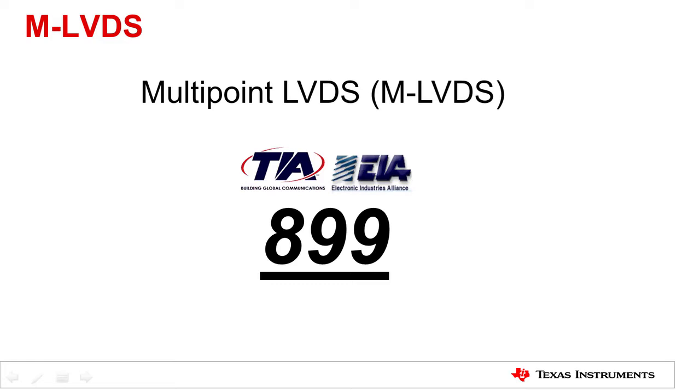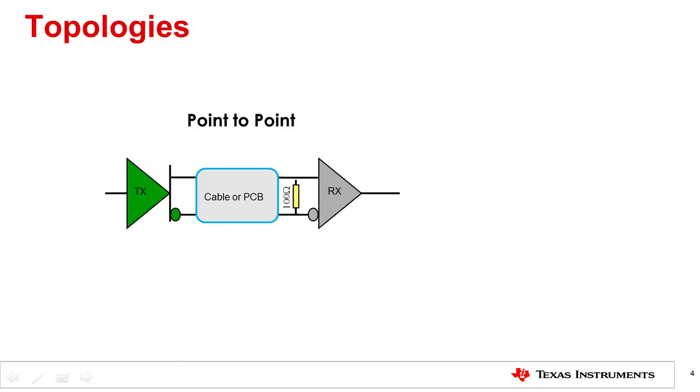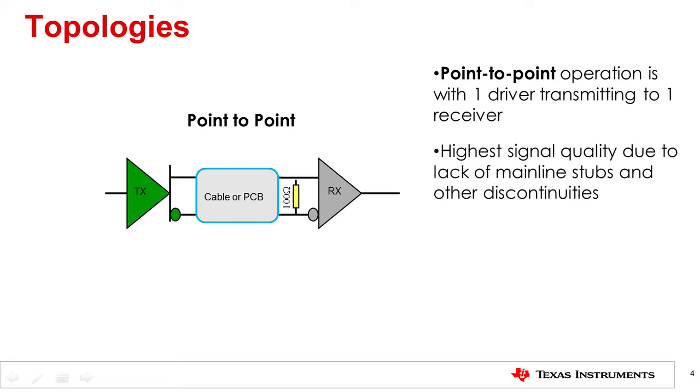Before I talk about MLVDS, let's look at the three different topologies. The first one is point-to-point. A point-to-point interface consists of a single driver and a single receiver connected by transmission media. The point-to-point connection provides the optimal configuration from a signaling quality viewpoint. Main line stubs and other discontinuities are avoided, and the highest possible signaling rate can be expected. The point-to-point topology supports simplex communication where the data transmission is unidirectional.